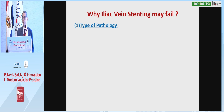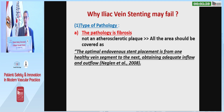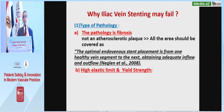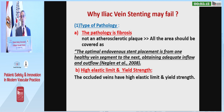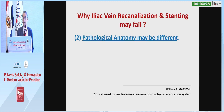Why may iliac vein stenting fail? It may be due to the type of pathology — the pathology here is fibrosis, not an atherosclerotic plaque as in arteries. So the entire area should be covered. The optimum stent placement should be from one healthy vein segment to the next, obtaining adequate inflow and outflow. The second pathological cause is the high elastic limit and yield strength in veins. The occluded veins have a high elastic limit and yield strength, so compared to arteries, immediate recoil is the rule in most cases, and routine stenting is recommended.